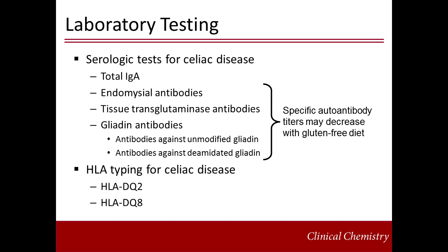Laboratory testing plays a key role in establishing a diagnosis of Celiac disease, and can be divided into serologic testing and HLA typing. The serologic evaluation generally includes measuring total IgA concentrations and specific autoantibodies — namely tissue transglutaminase (TTG) antibodies, deamidated gliadin antibodies, and endomysial antibodies (EMA). One important consideration is that in patients with Celiac disease, antibody titers may decrease with proper adherence to a gluten-free diet. HLA typing focuses on determining if either DQ2 or DQ8 are present.